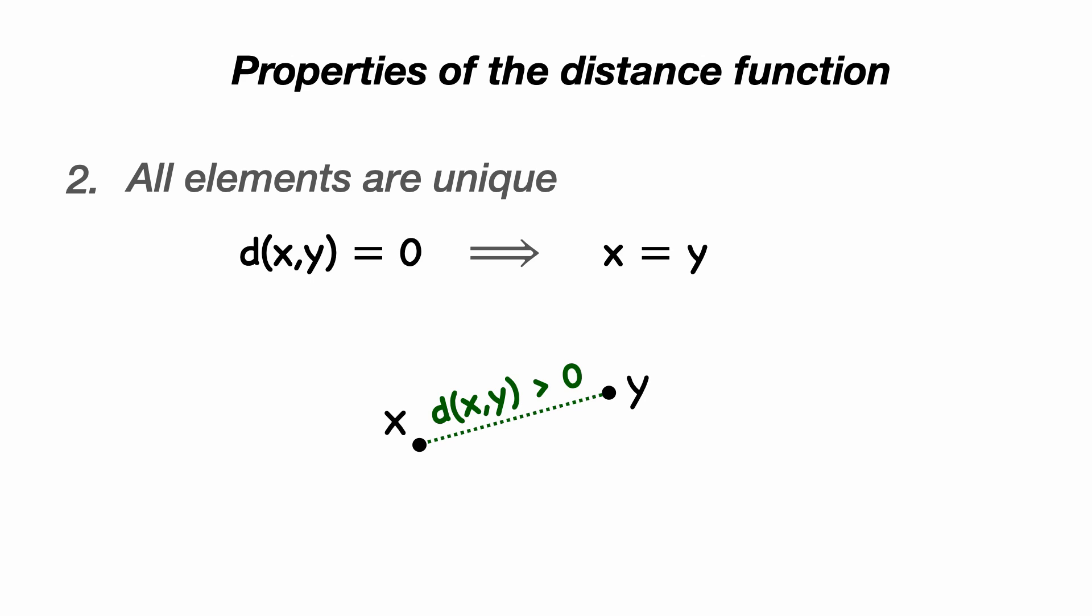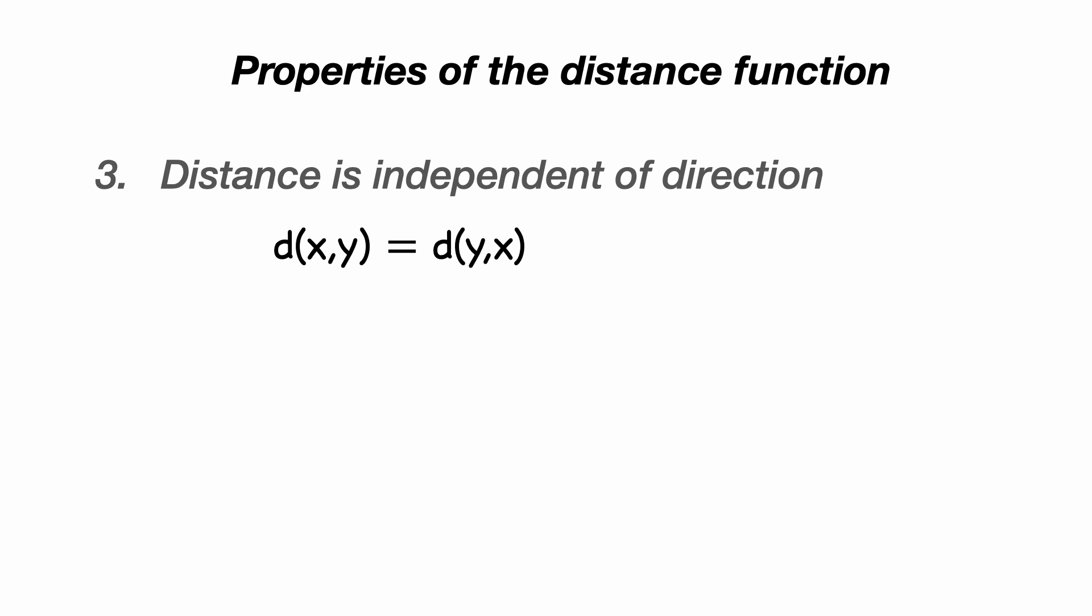The distance is independent of direction, and we write this as the distance between x and y is equal to the distance between y and x. So if we draw our two points x and y, and we have this green dashed line showing the distance between them, what we're saying is that the distance from x to y is the same as the distance from y to x. So the distance is independent of direction.